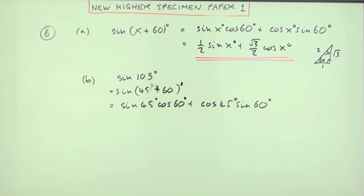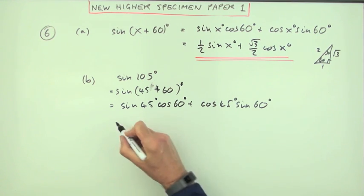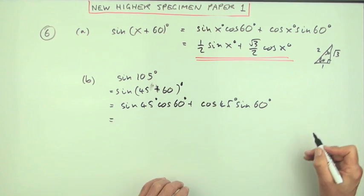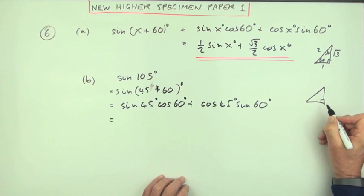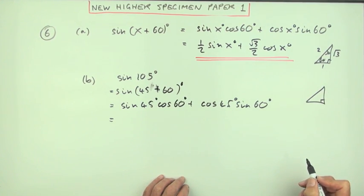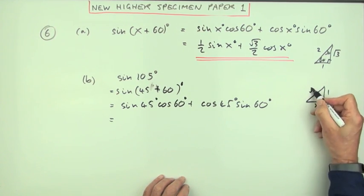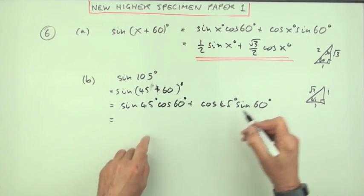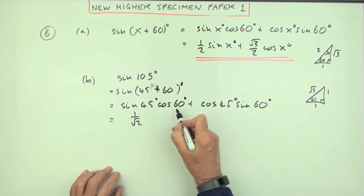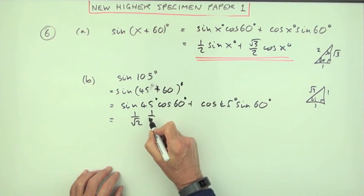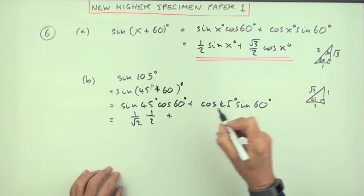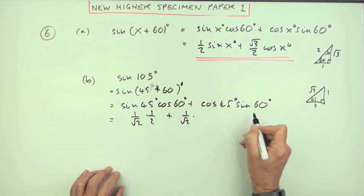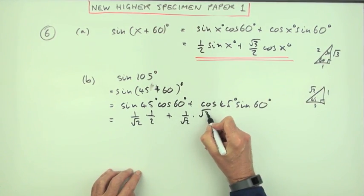I already know those two answers anyway, just got them over here. 45 degrees, that was the other triangle, the half of the square. This is half of a square: one, one, root two. So the sine of 45° is one upon root two, and I already knew the cos was a half. The cos of 45° is also one upon root two, and I already knew the sine was root three upon two.